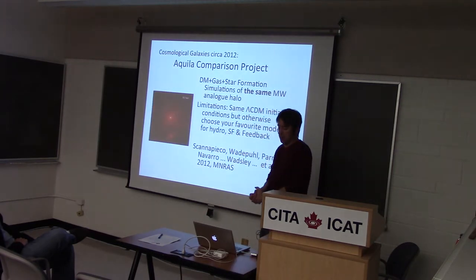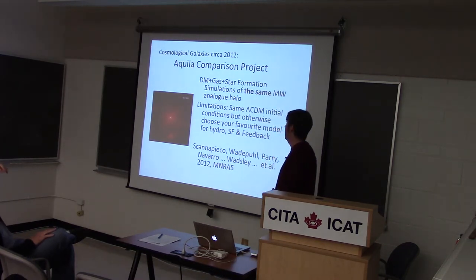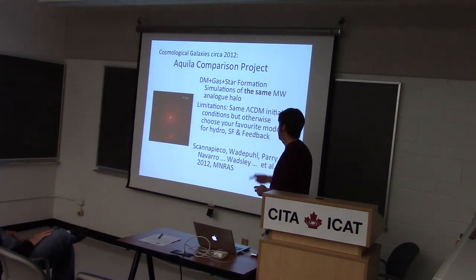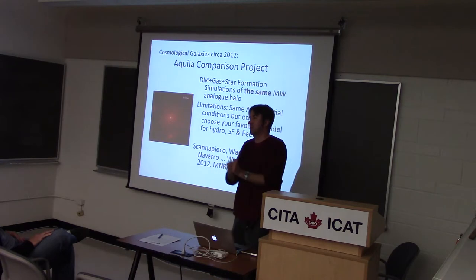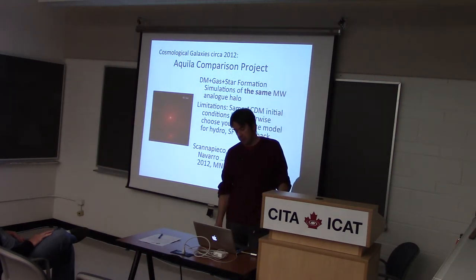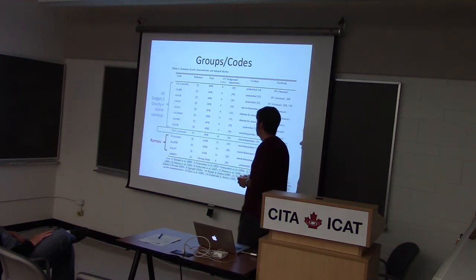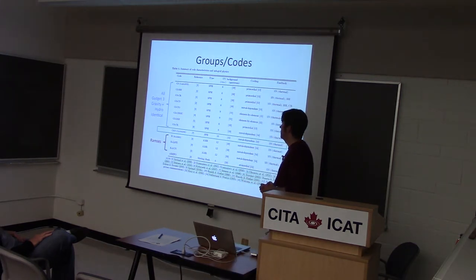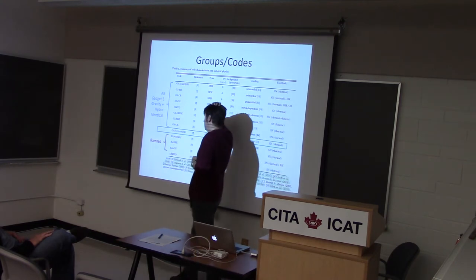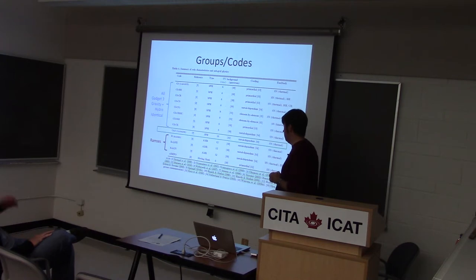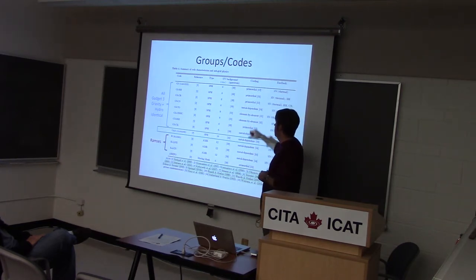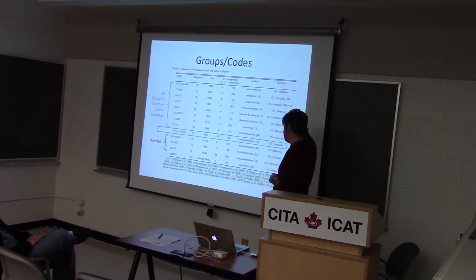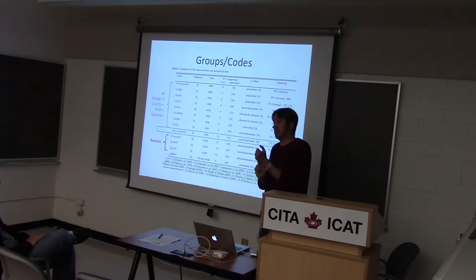Switching gears to talk about where cosmological galaxies are: this is the Aquila comparison project, a paper by Cecilia Scannapieco, Mark Wetterpool, and others. The idea was to take a halo in dark matter and give it to everybody and say, simulate it — what do you get? Gadget-3 was public, so many groups ran Gadget-3, all with different cooling, star formation recipes — some with primordial cooling, some with metals, some with element-by-element metals. There were also runs with Ramses and Arepo. So they're all different at the fine scales while the hydro and n-body should be identical.